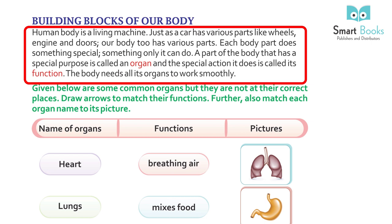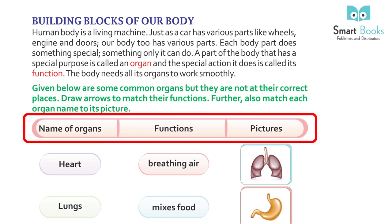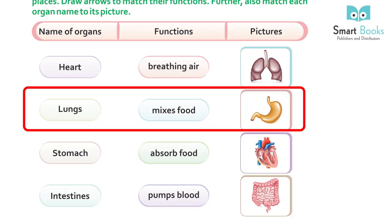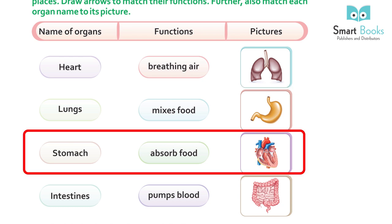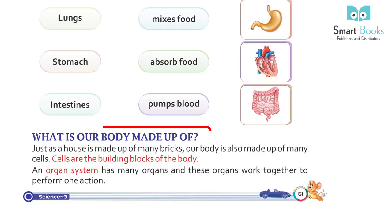The body needs all its organs to work smoothly. Given below are some common organs – draw arrows to match their function, and also match each organ name to its picture. Heart – pumps blood; lungs – breathing air; stomach – mixes food; intestine – absorbs food.